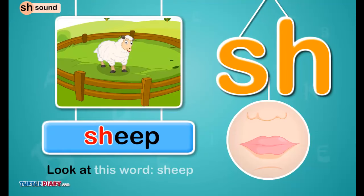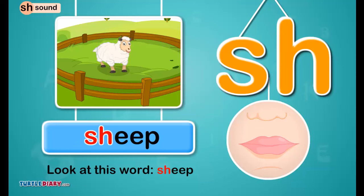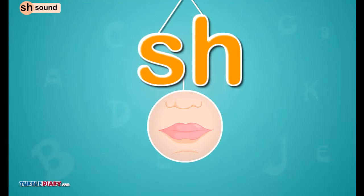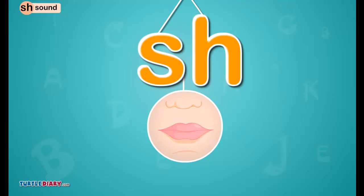Let's find out what our friends got from the toy shop. Look at this word: sheep. The letters S-H in sheep make the shh sound. Put out your lips a little. Let air flow out of your mouth to make the shh sound, as in ship.